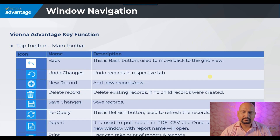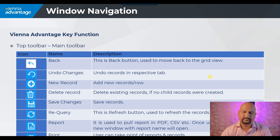In the top toolbar you would be able to see the back button, which is used to move back to the grid view. Another button is the undo changes, which undoes the record in the respective tab. Then we have the new record, used to add a new record or row. Then we have the delete record, which is utilized to delete the existing record if no child records were created.